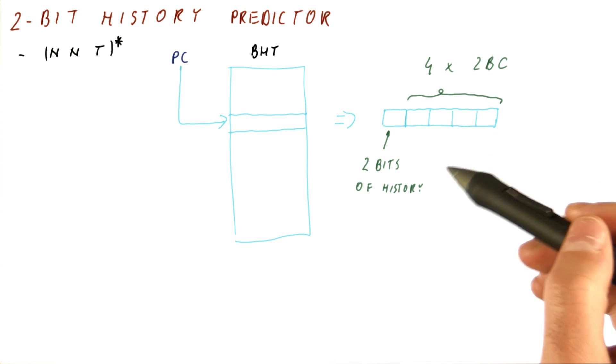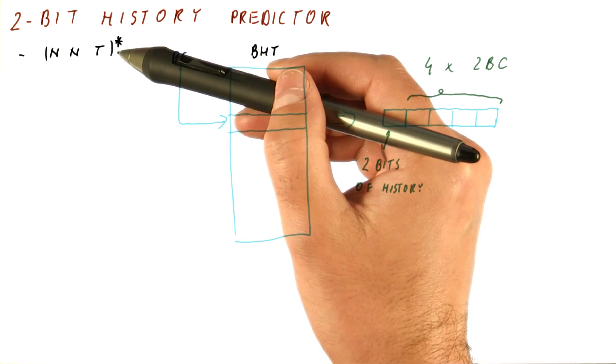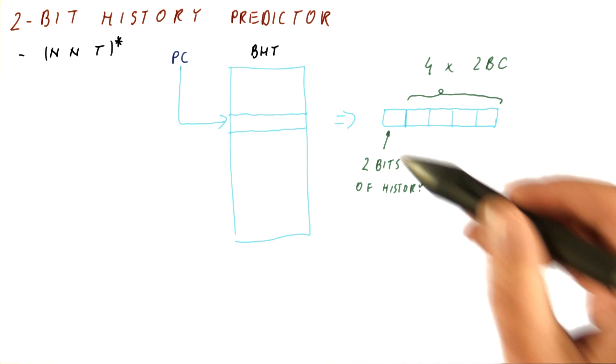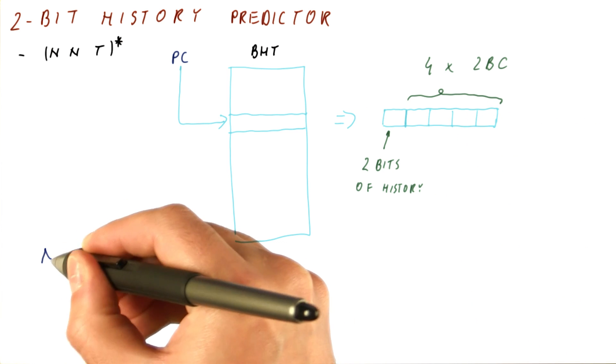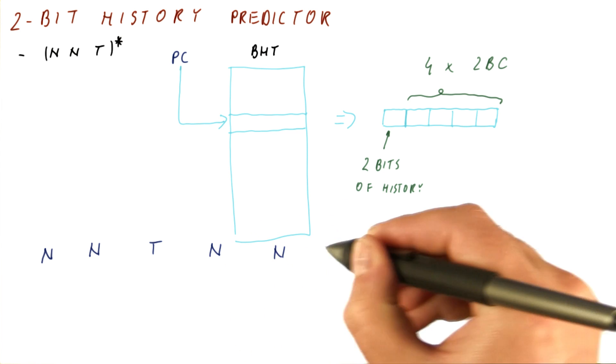Instead of going through a lengthy example of how this works when we try to predict this pattern, let's try to figure it out. The sequence of outcomes is N, N, T, N, N, T, et cetera.